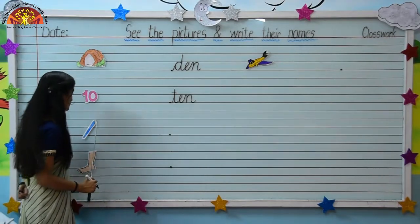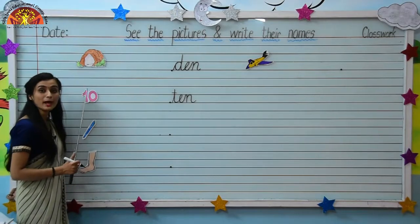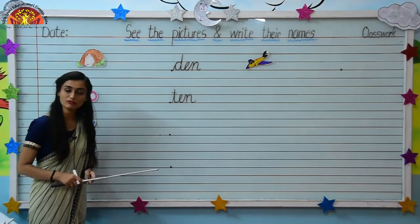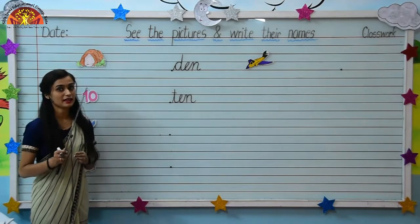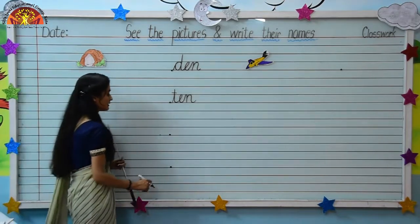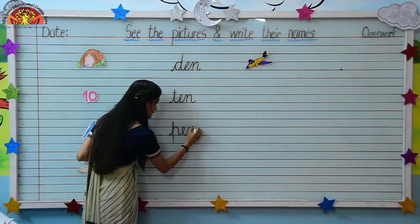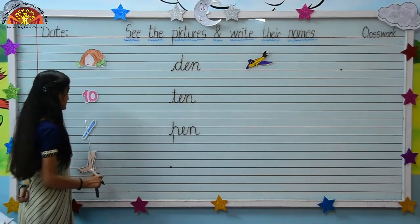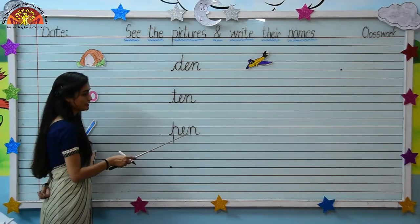Now let's see the next picture. What is this kids? Your teacher writes with this. This is PEN. So what is the spelling of PEN? The spelling of PEN is P-E-N. We will write the spelling over here like this: P-E-N. Write very neatly kids. This is a picture of a pen and the spelling is P-E-N.